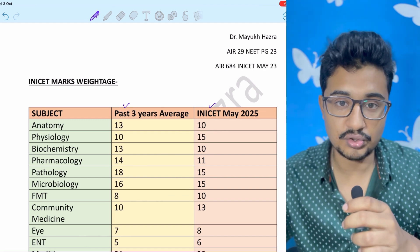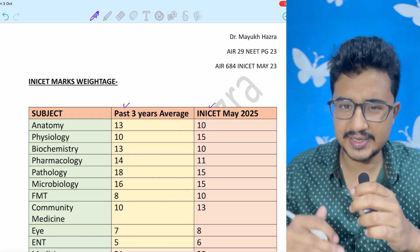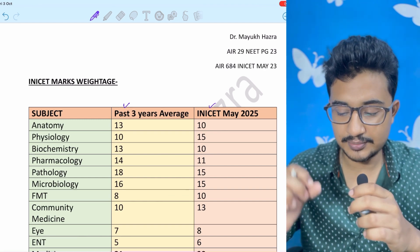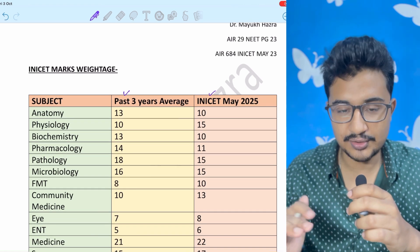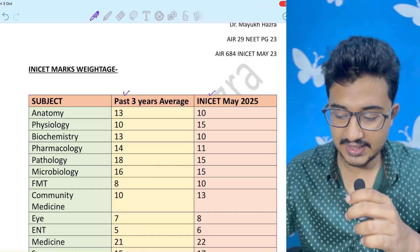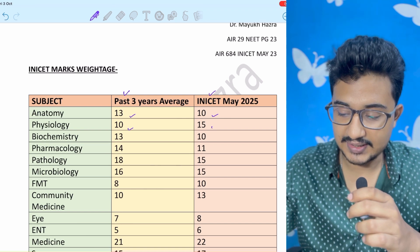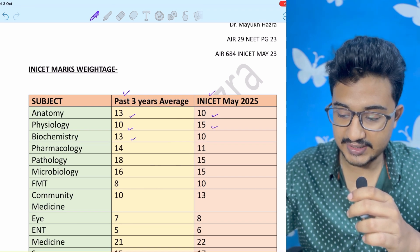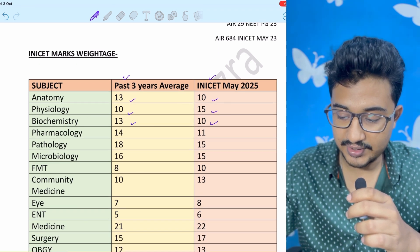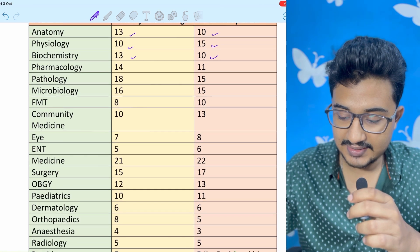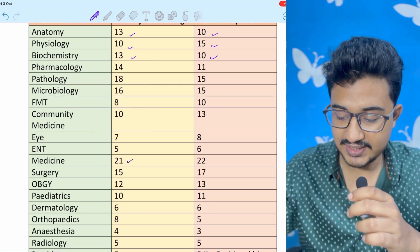INICET marks weightage is not that much constant as compared to NEET PG but if you see the average, you will see that it is the same. Like in anatomy, average was 13 and this time it was 10, physio 10, 15, biochem 13, 10. Like this is the marks weightage.